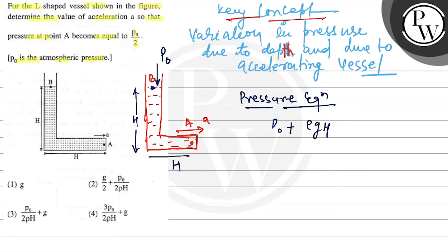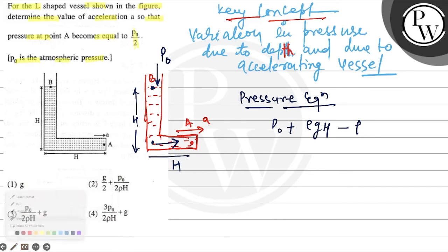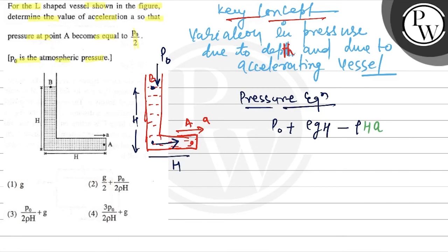Due to depth, and then we are moving towards the accelerating direction, pressure is less. Minus ρha, pressure variation due to acceleration. In the accelerating direction, pressure is less. So ρha, and that is equal to the pressure at point A.